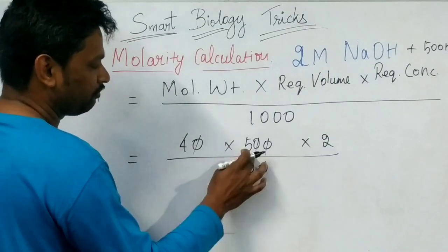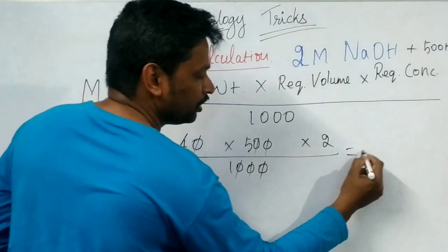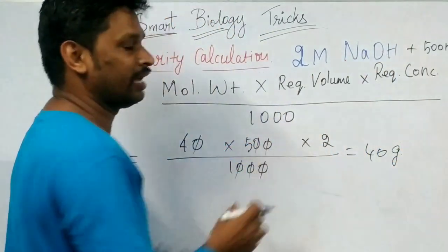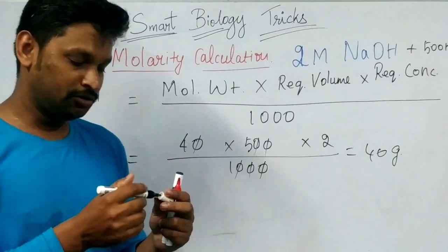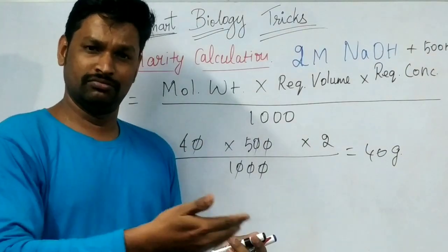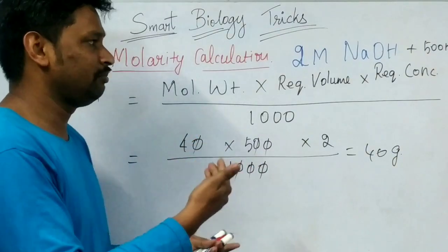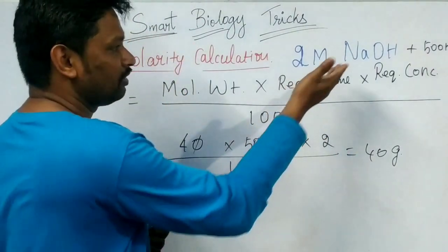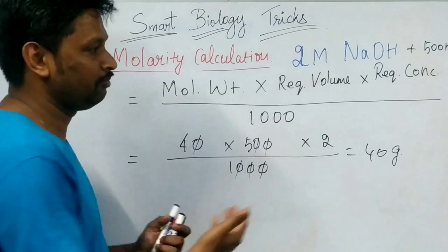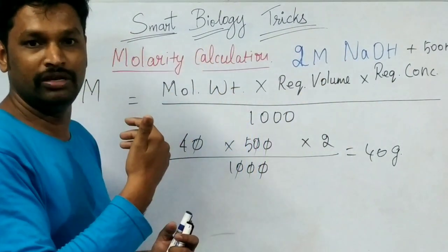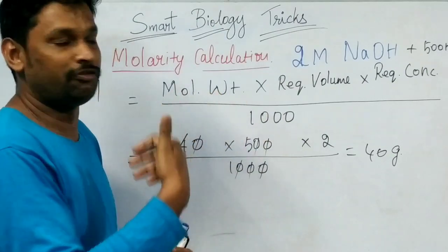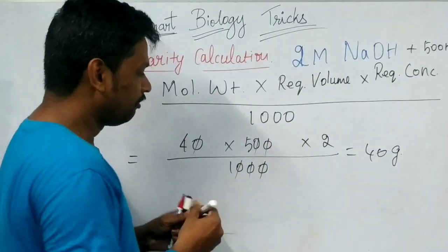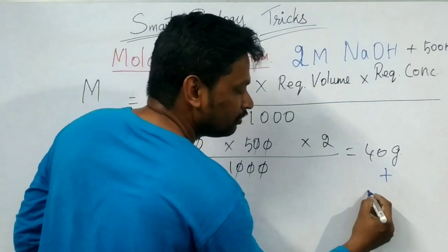Multiply 4 into 5 — that is 20, and 20 into 40. So this means 40 grams of sodium hydroxide you have to take. You have to weigh the chemical — take 40 grams of the powder or pellet. If it is a powdered chemical, you have to take 40 grams of the powder and dissolve it in 500 ml of distilled water.